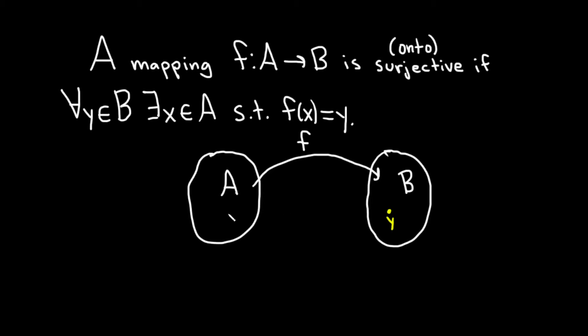What this means is I can find some other element over here, which is called x, such that our function takes this element x and sends it to y. In other words, f(x) is equal to y. And this has to be true for every single element y in B. So no matter which one you pick, you have to be able to find an element x that gets mapped there.